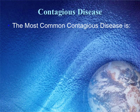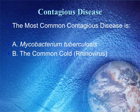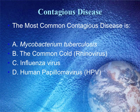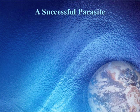The most common contagious disease is: Mycobacterium tuberculosis, the common cold spread by rhinovirus, influenza virus, or human papillomavirus? Everyone agrees: rhinovirus. The correct answer is indeed the common cold. It is the most frequent infectious disease in humans, with an average 2 to 4 infections per year in adults, and up to 6 to 12 in children. Remember, the common cold is caused not just by rhinoviruses, but also by some coronaviruses.